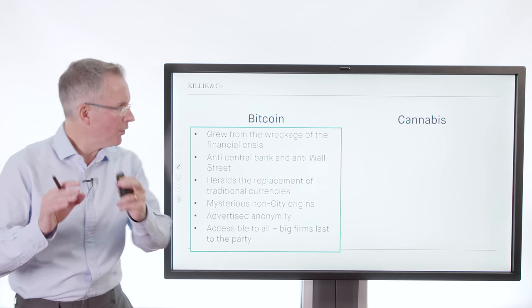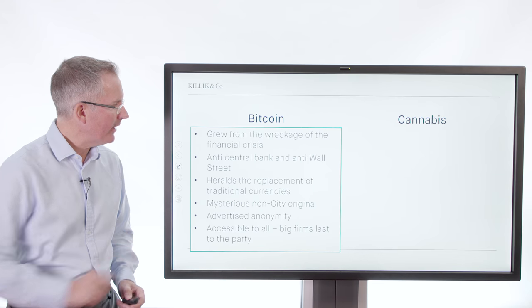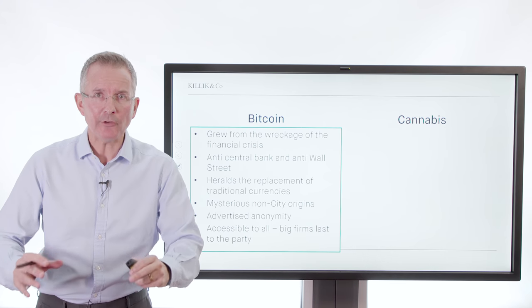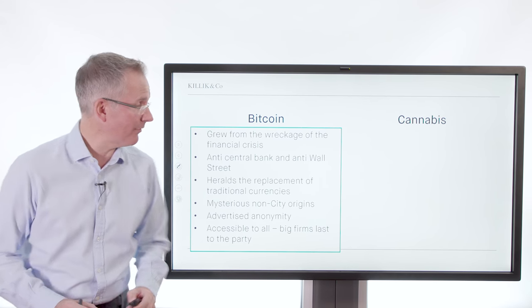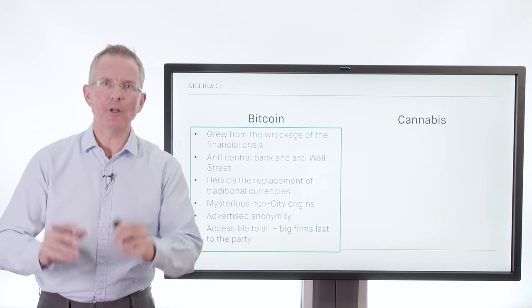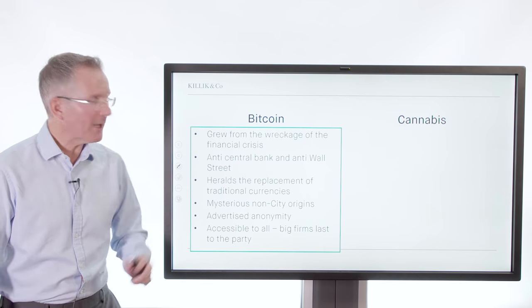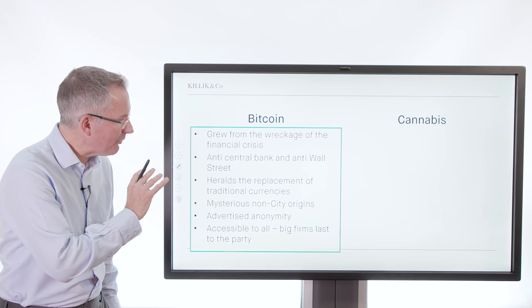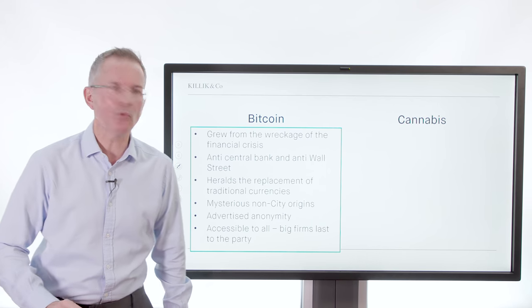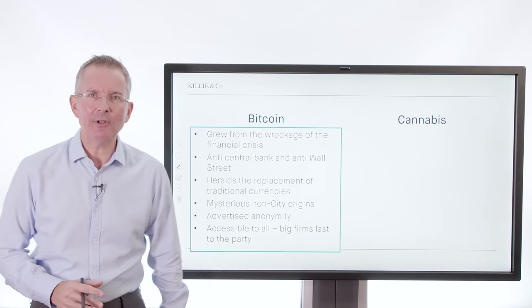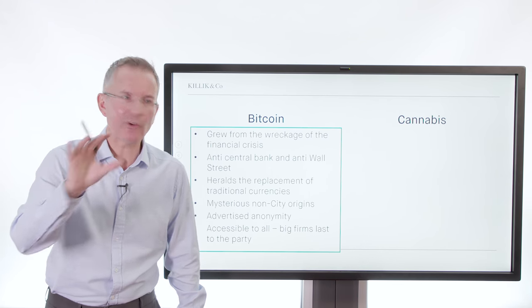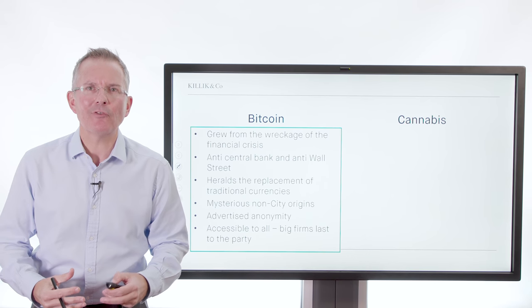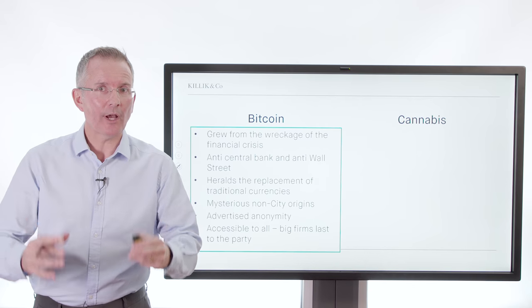Bitcoin grew from the wreckage of the financial crisis, and that helped because this is a mechanism that is anti-central bank, anti-Wall Street — or certainly could be portrayed that way. It's a way around having to use conventional currencies, around the conventional central bank system, around the control exerted by the liberal establishment. Replacement currencies are potentially on offer — the dollar being replaced by Bitcoin and Ether. It's a good story. Add some mysterious non-city origins: who is Satoshi Nakamoto, who created the original Bitcoin and blockchain idea? Advertise its anonymity. Market it as a way to get around the conventional financial system that let us all down during the financial crisis ten years ago. There's your story — currencies could be consigned to history.